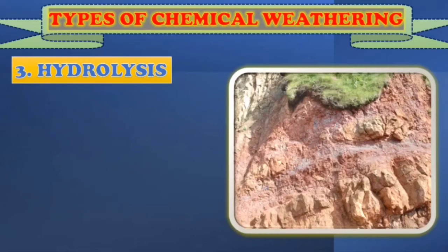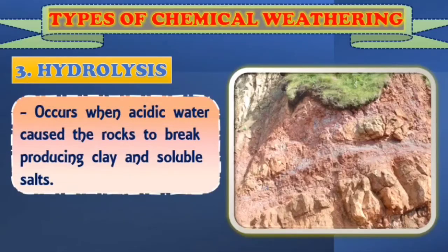Number three type of chemical weathering is hydrolysis. It occurs when acidic water causes the rocks to break, producing clay and soluble salts. When it rains, acidic water coats the rocks and produces clay and soluble salts. That is why we notice that some soil has a clay-like, soft texture — that is hydrolysis causing chemical weathering of rocks.